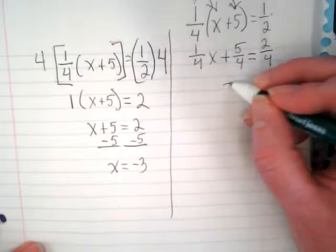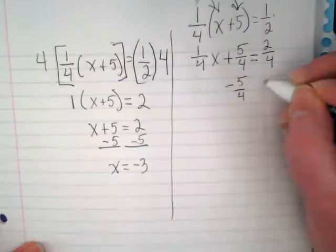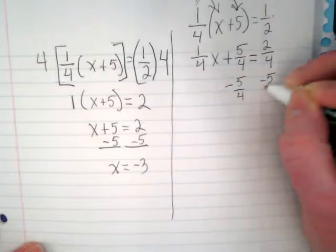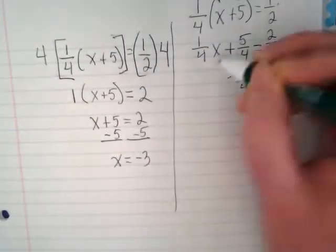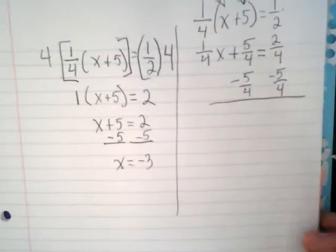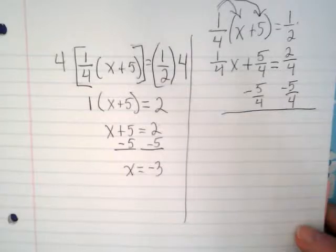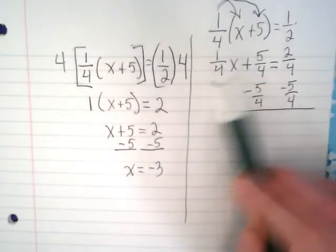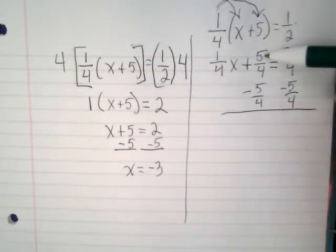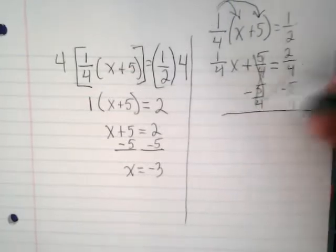And now I want to subtract the 5 fourths, and I'm going to subtract it from both sides of the equation. It does look like it's times, but we're working with variables, so it's an x. I'm going to bring this down because it's staying the same. Positive 5 fourths minus 5 fourths becomes 0.